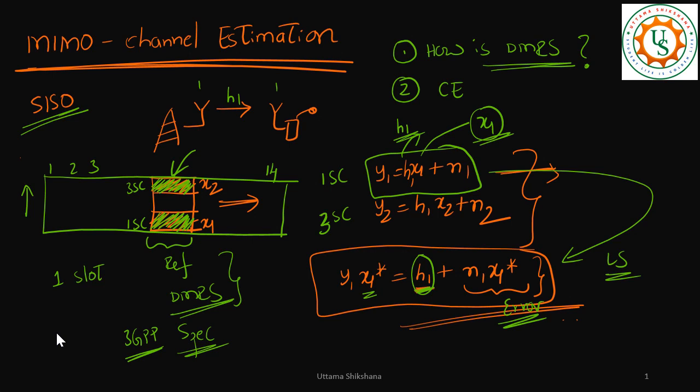Hey guys, welcome back. In this video I want to talk about MIMO channel estimation — the continuation from the previous video. In the previous video we were talking about one of the scenarios or configurations for which we can estimate the MIMO channel. In this video we will see some other configurations possible from 3GPP. I just want to recap what was done in the previous video, because based on that we can connect the concept for the next configuration.